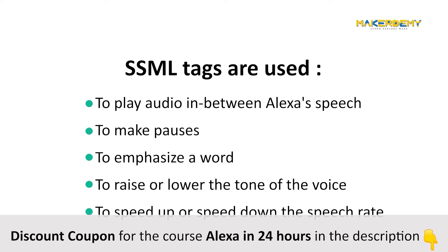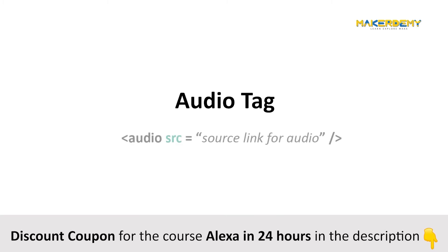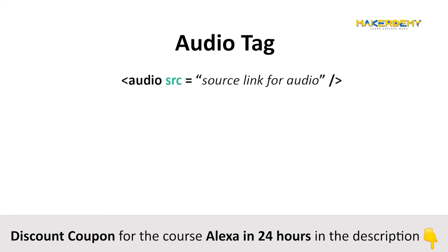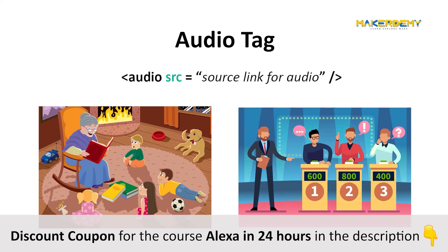Let me give you an example of an SSML tag. We will take a look at something called the audio tag. The purpose of the audio tag is to introduce audio sounds in between Alexa's speech. This can be very useful in situations like a storytelling skill where you can make it more engaging by including sounds, or a quiz skill that will make a cheering sound when the user says the correct answer or a buzzer sound when the user says a wrong answer.